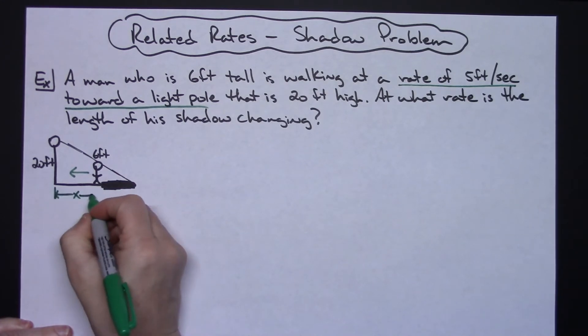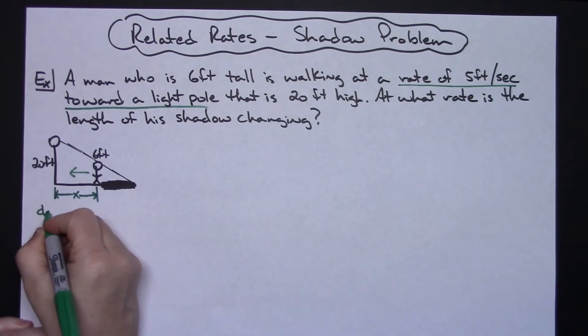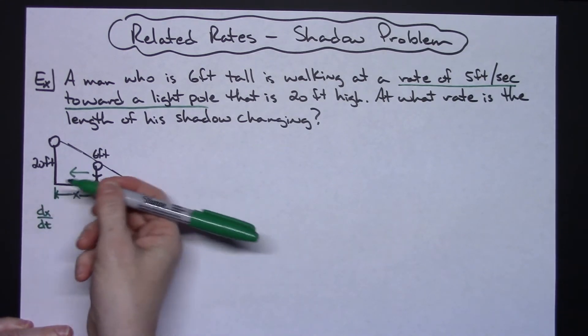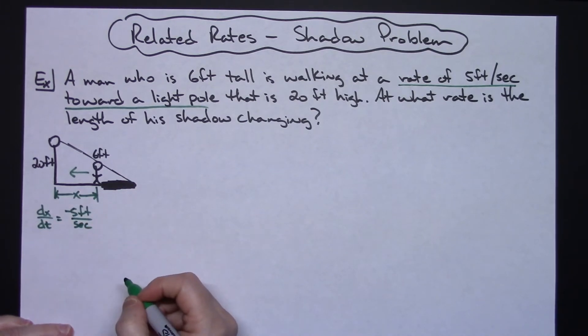I'm going to denote that as part of my given. We're going to call that x just because we need something to denote it here. So our dx/dt—now remember, walking toward—so we're going to use it as a negative, so it's negative five feet per second. That's our given right there.